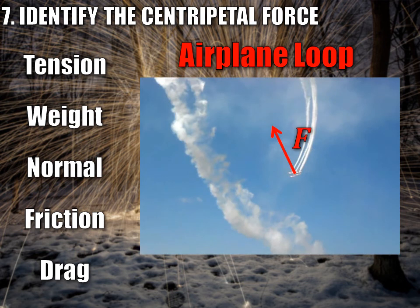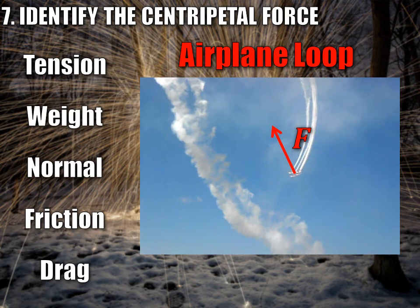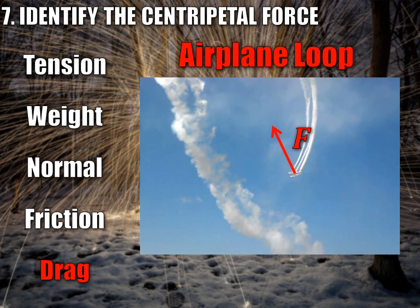When an airplane makes a loop, there must be a force pointing to the center of the circle. This force is coming from the air itself pushing against the wings of the airplane — that's called a drag force. It's the force acting on an object as it moves through a fluid. So in this case, it's the drag force providing the centripetal force, which allows the airplane to move in a circular path. If you took away the air, the airplane would not be able to go in the circle — in fact, it wouldn't even be able to fly. When you want to move in a circle, you redirect the wings so the drag force points to the center, and the airplane moves in a loop.